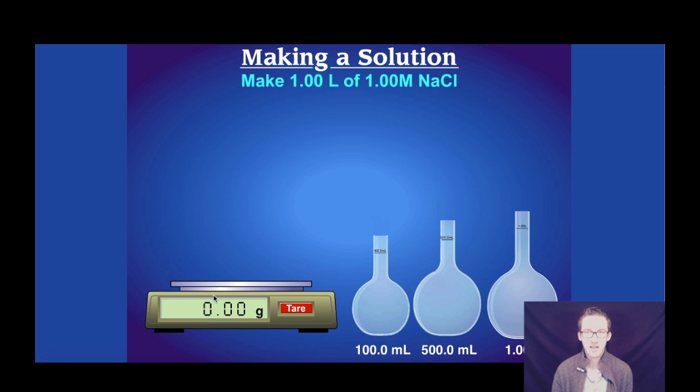So the first thing we want to do is pick our what's called volumetric flask, which are these sort of round looking flasks that are specifically designed for creating solutions with very specific concentrations. Because we want one liter of this solution, we're going to choose the one liter flask.